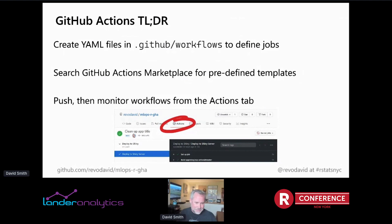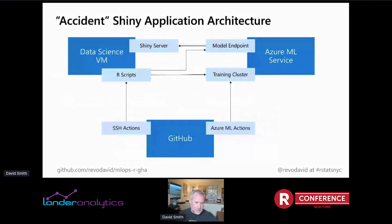There's a nice marketplace where you can search — for example I searched for how to run a command on a remote server with SSH, found a predefined action or template, cut and pasted it into my code, and had it working really quickly. Once you've got these actions set up in those YAML files, you push your code to GitHub the same way you normally do, and then the actions automatically trigger according to rules you define and start all your processes.